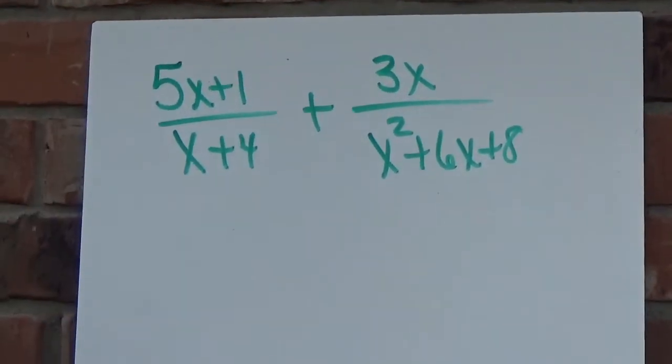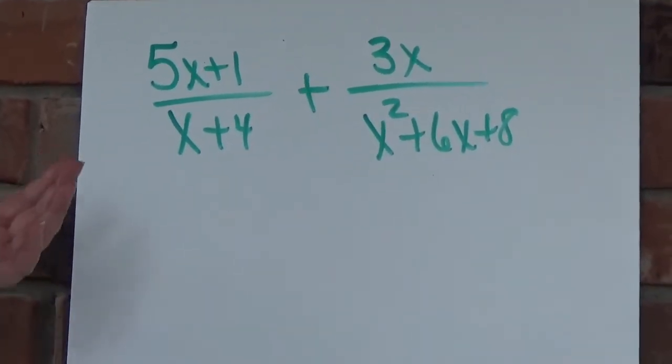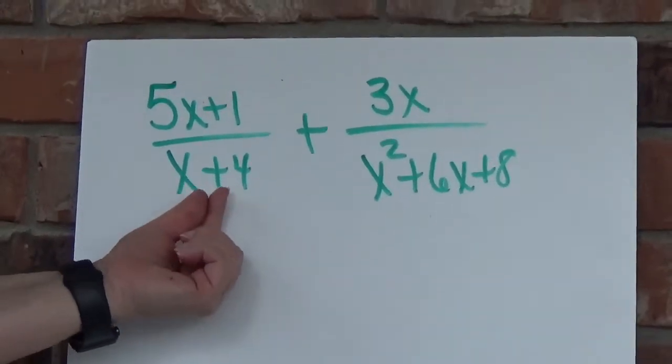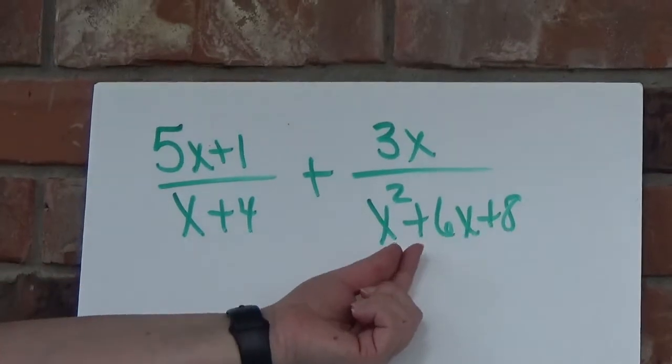This is the last example. It's similar to the one we just did, but what I notice is this is a polynomial that can't be factored, but this one can be factored.